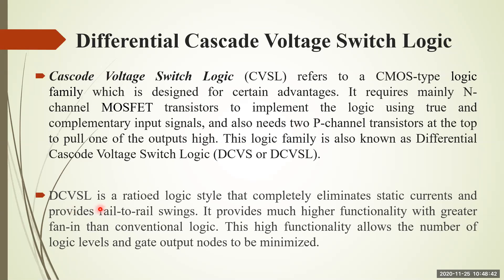DCVSL is a ratioed logic style that completely eliminates static currents. The main advantage is that it eliminates static currents and also provides rail-to-rail swing, meaning the signal swings between the high and low stages. In VLSI, the maximum supply voltage is nowadays around one volt or 0.9 volts, so the signal swings between that one volt and zero volts — those are the rail-to-rail conditions.